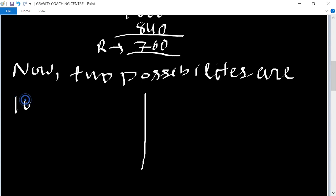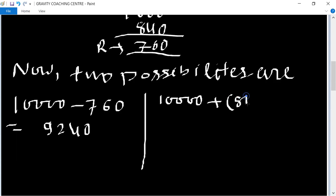First one is that 10,000 minus 760, and its difference equals 9240. And another possibility is that 10,000 plus (840 minus 760) equals 10,000 plus 80 equals 10,080.